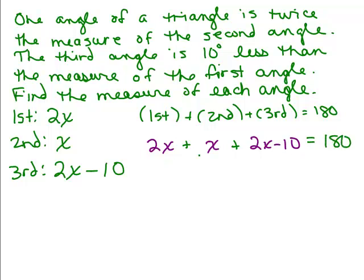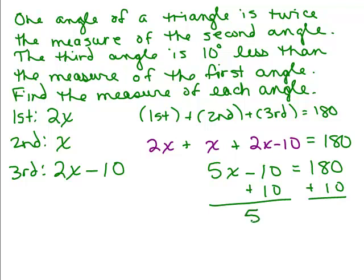On this side, let's add the three that are like terms here. 2x plus x plus 2x is 5x minus 10 equals 180. Notice I'm not writing in the degree symbol, but we could do that at the end of the problem. When we write our final answer, we do have to remember to write everything in degrees. So how are we going to solve this? We'll add 10 to both sides. And then we have to divide everything by 5. So x is going to be 38 degrees.